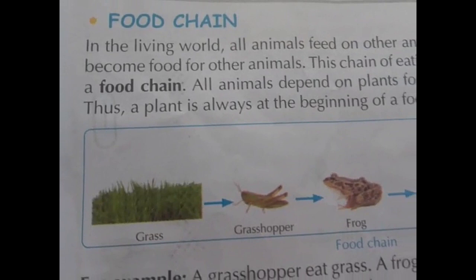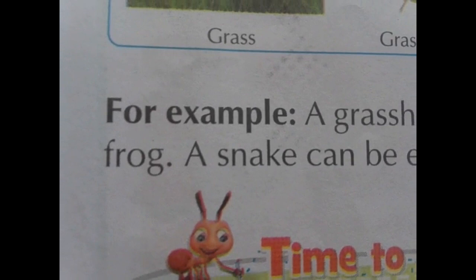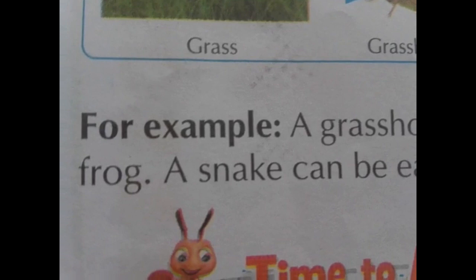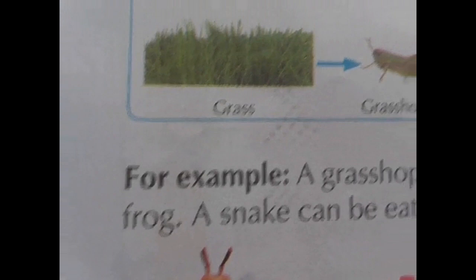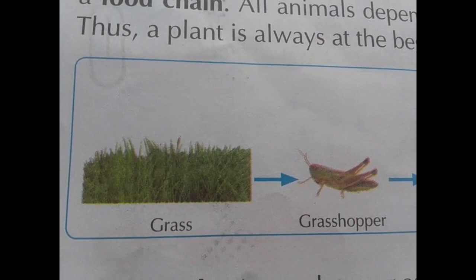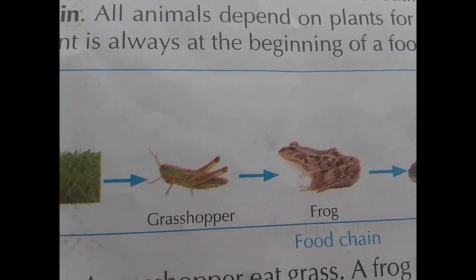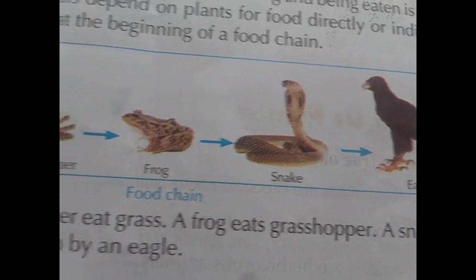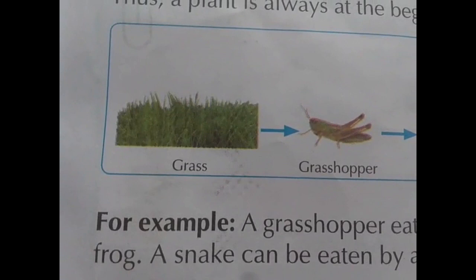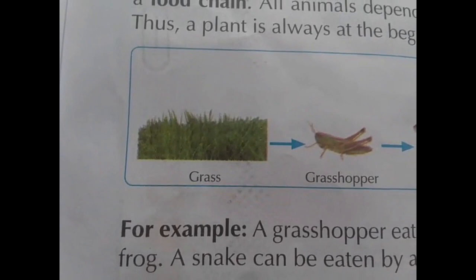Food chain: in the living world, all animals feed on other animals and plants in turn. This chain of eating and being eaten is called a food chain. For example, the grasshopper depends on grass, the frog depends on the grasshopper, the snake depends on the frog, and the eagle depends on the snake. Each one is depending on others.